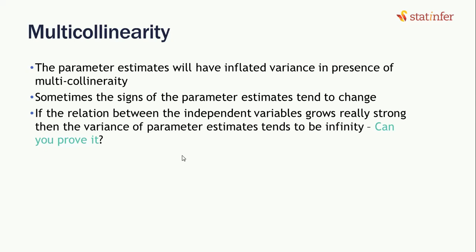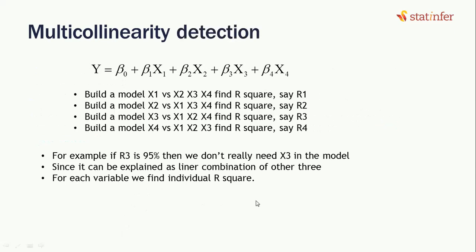If the relationship between independent variables grows very strong, the variance of parameter estimates tends toward infinity. So can we detect multicollinearity before building the real model? To detect it, consider a predictive model y with predictors x1, x2, x3, and x4. We could use the correlation coefficient between pairs like x1 and x2, but that only captures pairwise relationships — it does not capture x1's relationship with x2, x3, and x4 combined. So we need a different method: we remove y from the equation, bring x1 to the response side, and build a new model.